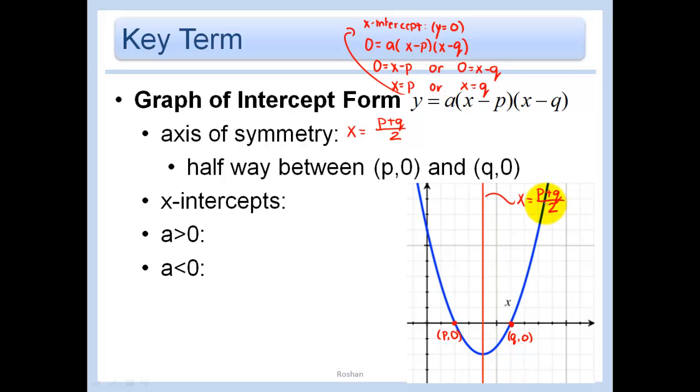The x-intercepts were P and Q. And yet again, if this A is greater than 0, it just means that it opens up. And if A is less than 0, it just means that it opens down.